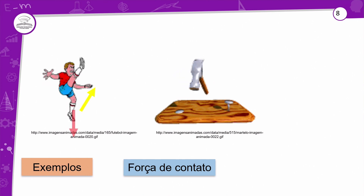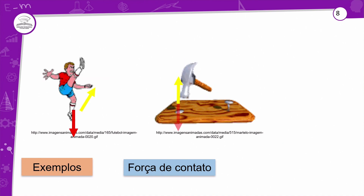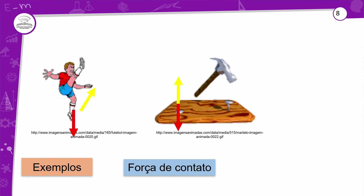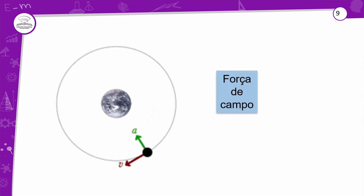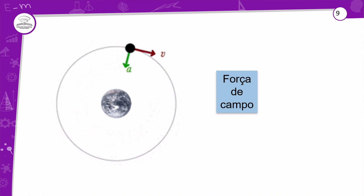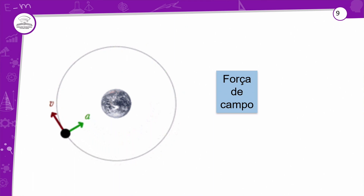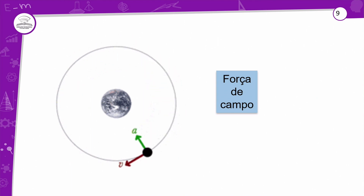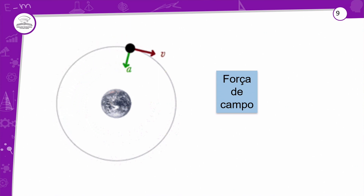Força de contato é aquela que você toca — tem que ter o contato. Força de campo, como a força de atração da Lua com a Terra, não requer contato. Observamos que não tem contato entre a Terra e a Lua. A setinha em verde representa a aceleração centrípeta, que liga a Lua ao centro, e a velocidade tangencial saindo pela tangente — é uma velocidade constante. A Lua faz uma volta completa em torno da Terra em torno de vinte e oito dias, por isso os meses lunares.